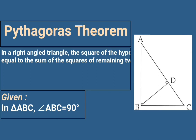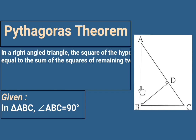The next step is to write 'To Prove.' Reading the statement carefully, we have to prove the square of the hypotenuse equals the sum of the squares of the remaining two sides. The hypotenuse is the side opposite the right angle. In triangle ABC, angle B is 90 degrees, so AC is the hypotenuse. We have to prove: AC² = AB² + BC².